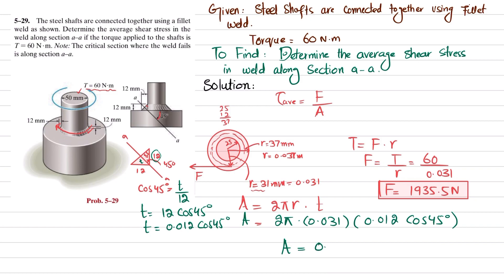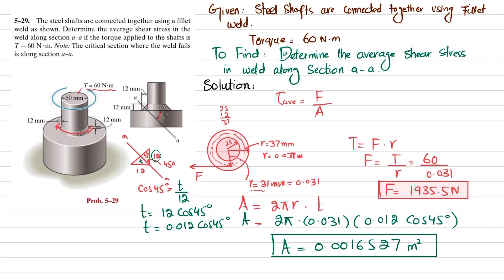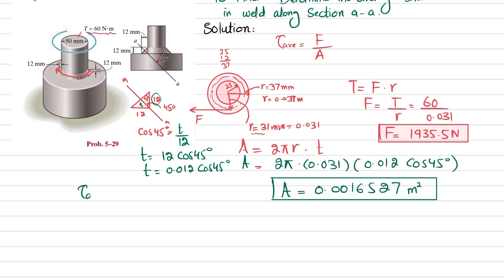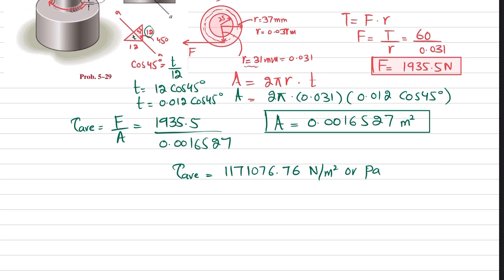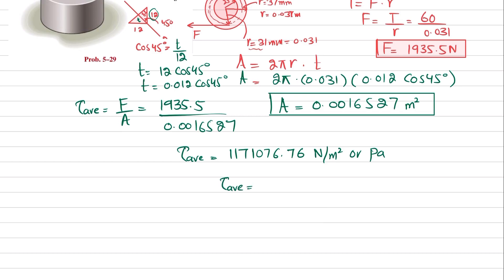The shear area is 0.0016527 square meters. Now we have both values, so average shear stress equals shear force divided by shear area: 1935.5 newtons divided by 0.0016527 square meters equals 1,171,076.76 newtons per square meter, which is pascals. In megapascals that is 1.17 MPa.